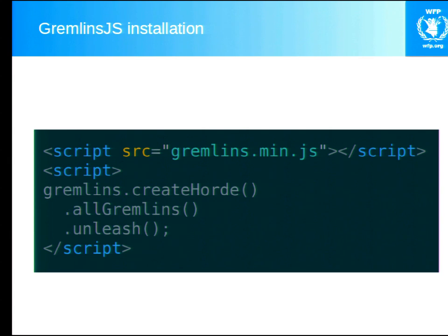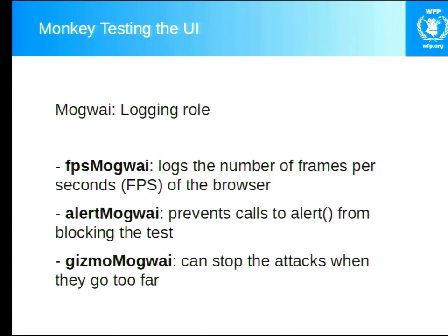Gremlins can be installed directly into HTML, as I show in this example — that's the way I often use it. It can also be included as a module for RequireJS, and it can be run in your browser as a bookmark, so you can actually test it on live sites as well. How does Gremlins.js work? It all starts with a friendly Mogwai. In Gremlins.js, the Mogwai is the logging tool — it lets you know what's happening and how your application is performing. It receives information and reports through the browser console.